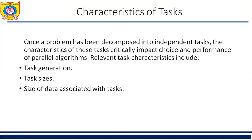The various decomposition techniques described in the previous section allow us to identify the concurrency available in the problem and decompose it into tasks that can be executed in parallel. The next step in the process of designing a parallel algorithm is to take these tasks and assign or map them into available processes. While devising a mapping scheme to construct a good parallel algorithm, we often take a cue from decomposition. The nature of the tasks and interaction among them has bearing on the mapping.